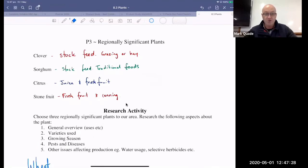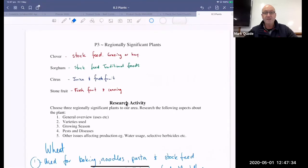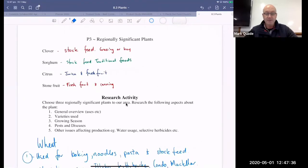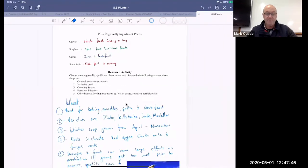So citrus, so juice and fresh fruit, stone fruit, fresh fruit, and canning. Now, you've got a research task here to do. So basically, I want you to pick three regionally significant plants. I've done one here for you. I want you to do a little bit more detail. I've just done it quickly.